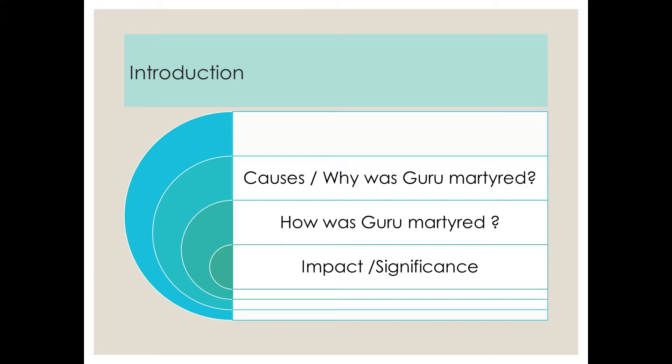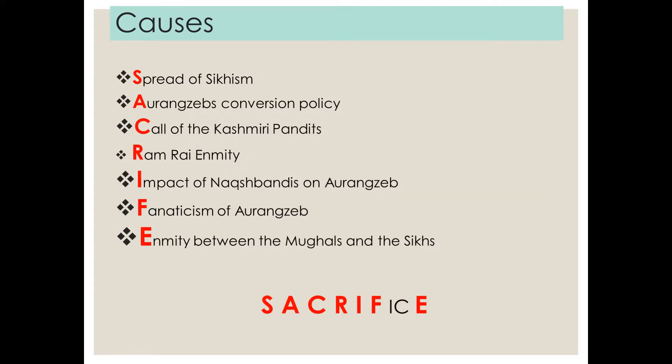Let's start with the first topic: why was Guru martyred? In history people always say it is very difficult to learn — there are so many points and dates. But there is a way to learn things in history. For the causes, if you understand them, there are about six points. The word I've made for you is SACRIFICE — using the first letters of these words — although in this, I and C would not be used.